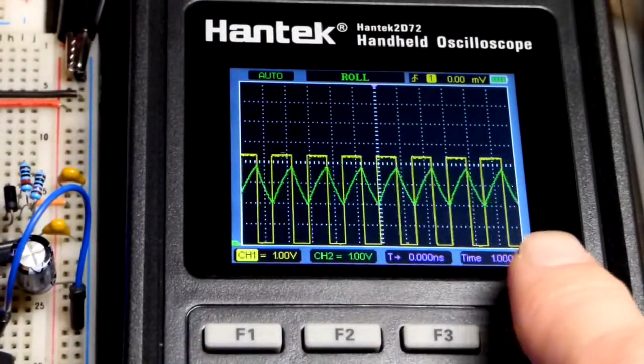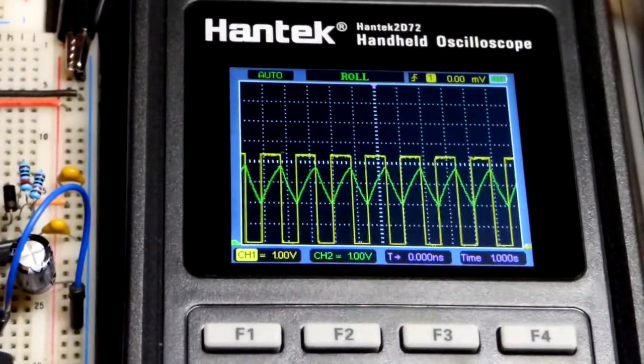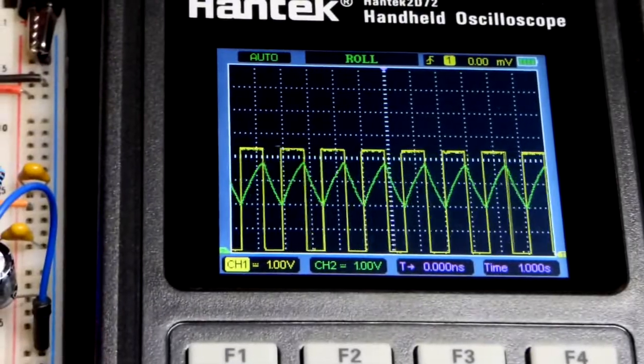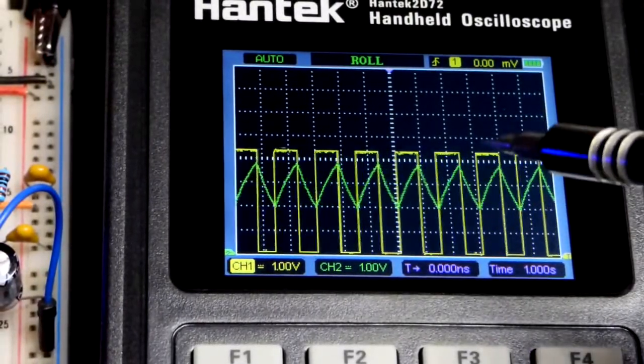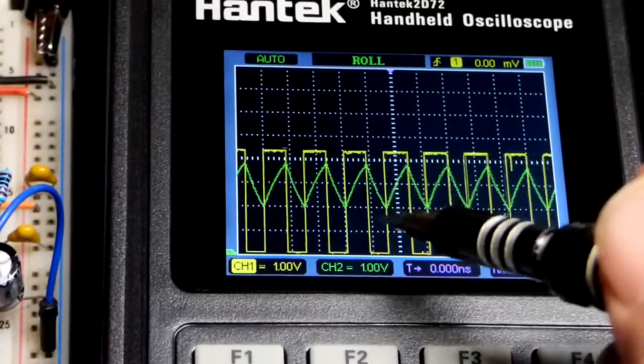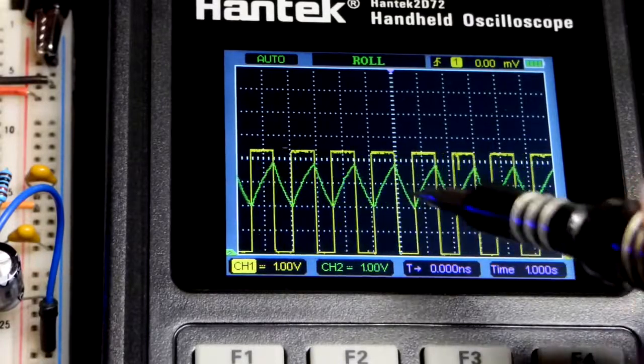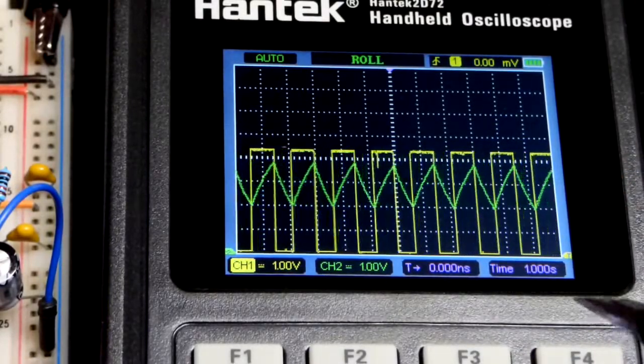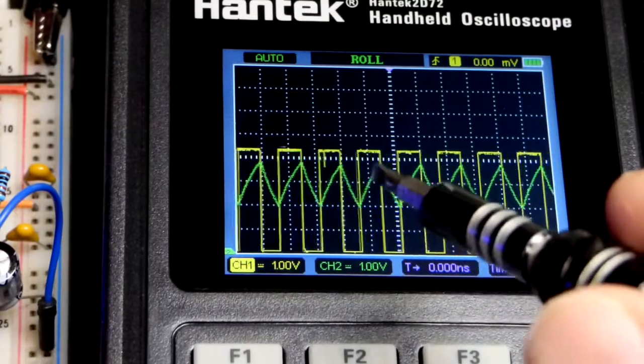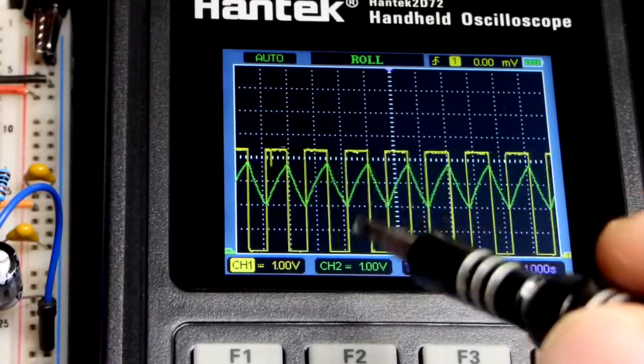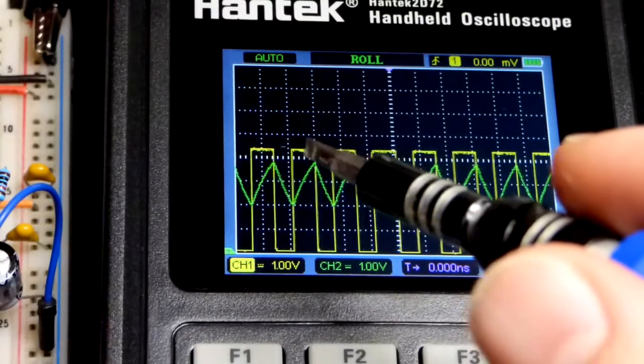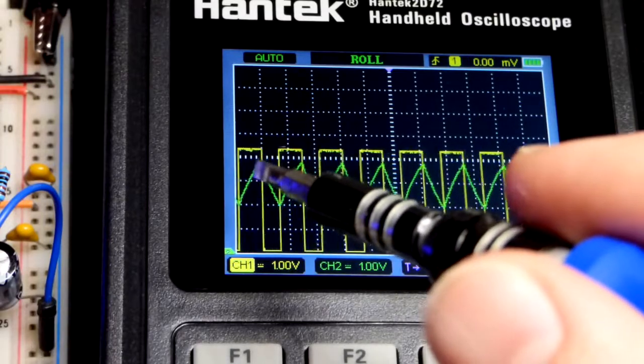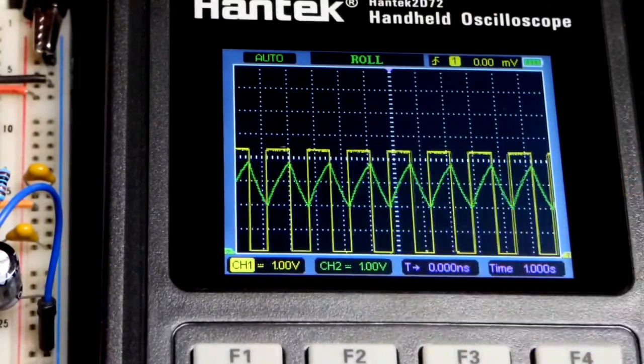You can see the two waveforms there so they're interacting together. The output is the yellow line and then the capacitor charging and discharging is the green line. You can see their relationships together there. When the capacitor discharges to one-third supply voltage, the output goes high. And then when it charges up to two-thirds supply voltage, the output goes low.